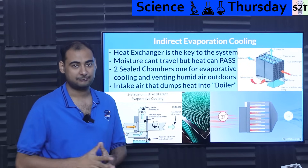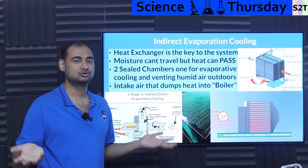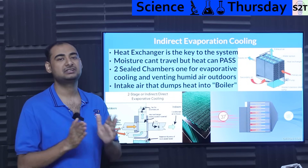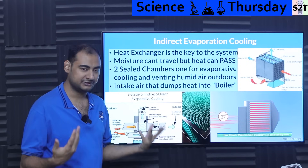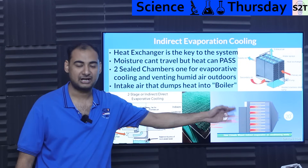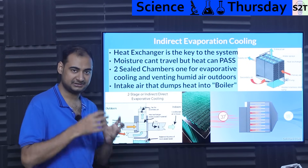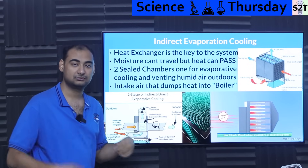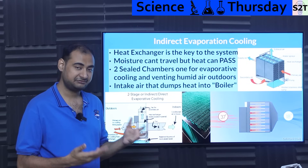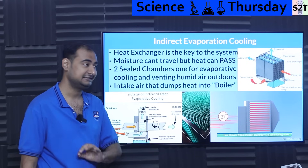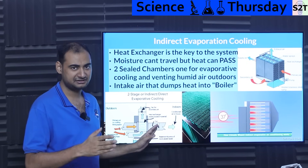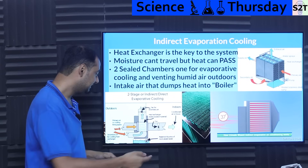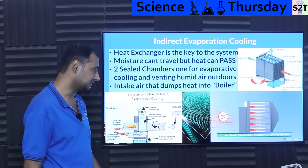So we come to indirect evaporative cooling. The idea is: what if we disassociate the two parts by putting a heat exchanger in the system? The key point of a heat exchanger is that moisture cannot pass from one side to the other, but heat can. You have dry channels and wet channels — air comes through, goes through the heat exchanger, cools down, and goes into your indoor space without adding any humidity.